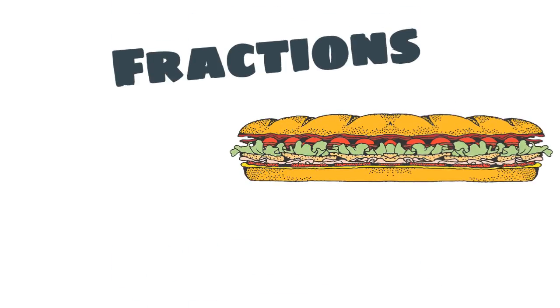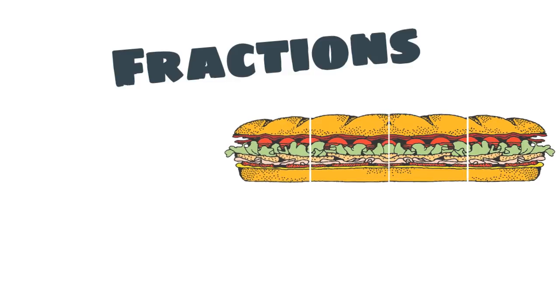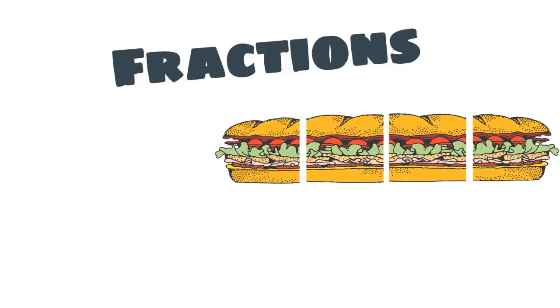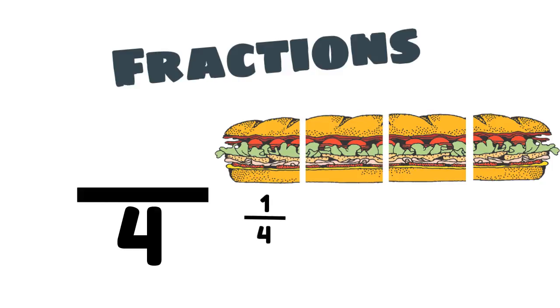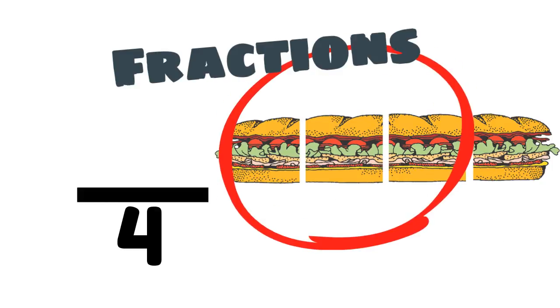Let's look at another example. Here we have a sandwich that has been cut into four equal parts. That means the denominator will be four. Each one of the equal parts is one fourth, or one quarter. If someone were to be given three of those parts, they would have three quarters of the whole sandwich.